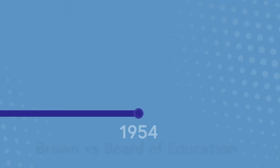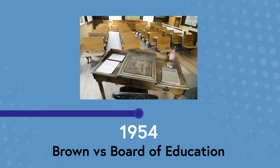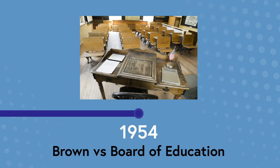Another historical landmark came just six years later, this time in the United States. In 1954, Oliver Brown, the father of Linda Brown, a third grade student from Kansas, tried to enrol his daughter in their local school. But her enrolment was rejected because Linda was African American. And in those days, American schools were segregated by race. So while Linda's white neighbourhood friends were able to attend their local school, she was forced to travel on a bus to a different school, one for African American children.